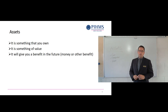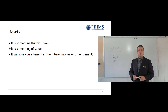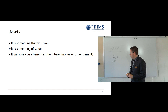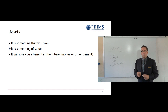Some assets give you money benefits directly. For example, if you owned a hotel building — let's go through it: it's something you own, it definitely has a value, and it gives you a benefit by having people come and stay, giving you money in return for those stays. That's an example of an asset giving you a benefit in money terms.